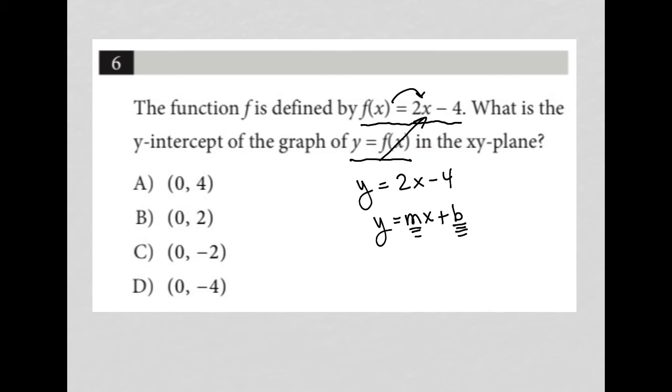And m represents the slope. So for us, we know that our slope is 2 and our y-intercept is -4.